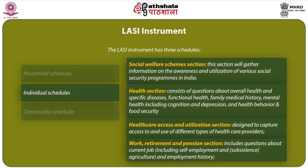The social welfare scheme section includes information on awareness and utilization of various social security programs in India. The health section consists of questions about overall health and specific diseases, functional health, family medical history, mental health including cognition and depression, health behaviour and food security. Healthcare access and utilization is also included, designed to capture access and use of different types of healthcare providers. The work, retirement and pension section includes questions about current job including self-employment and subsistence agriculture, and employment history.